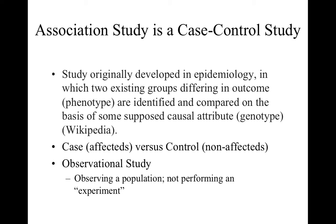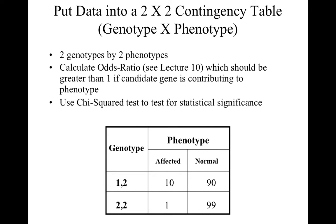An association study is a case-control study. You gather together a case group — the people showing the affected phenotype — and a control group that does not show the phenotype. You have two phenotypes (affected and normal) and two genotypes: heterozygotes containing one mutant allele and one wild-type allele, and homozygotes with both wild-type alleles. By genotyping your case and control groups, you fill a 2x2 contingency table. From this table, you can calculate the odds ratio — which should be greater than 1 if the candidate gene contributes to the phenotype — and use the chi-squared test to assess statistical significance.